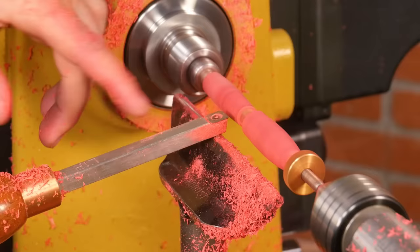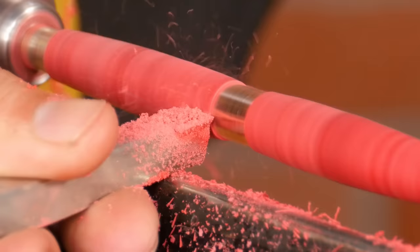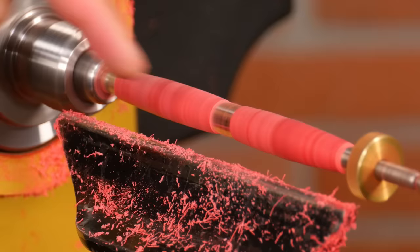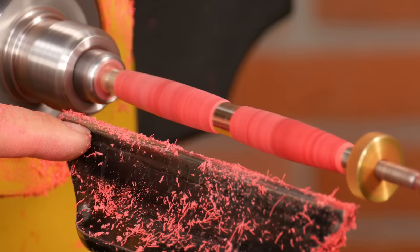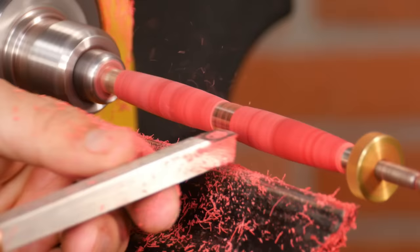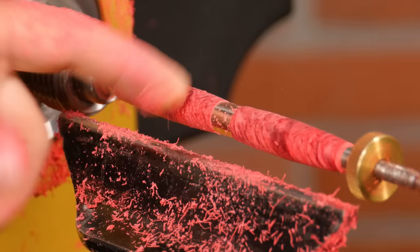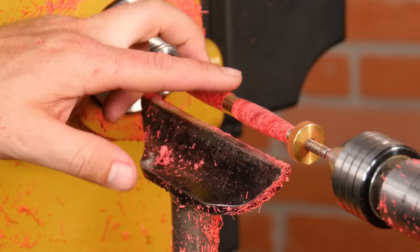This is where the radiused cutter comes in handy because the corners don't dig in, which makes turning a lot easier. Keep an eye on the bushings as you turn, because not only do they hold the blank in place, they're also an excellent gauge for the finish diameter of the pen. Stop turning when the blanks are just proud of the bushings, so we'll have enough material to compensate for sanding.